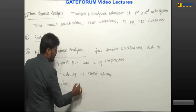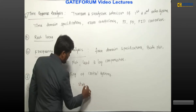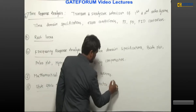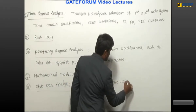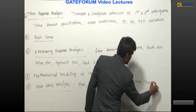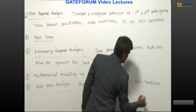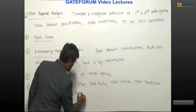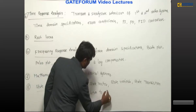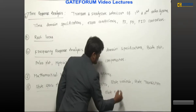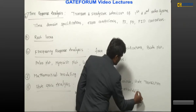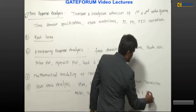In state space analysis we need to discuss what is meant by state, then state vector, state variable, state transition matrix, solution to state equation, controllability, and observability.